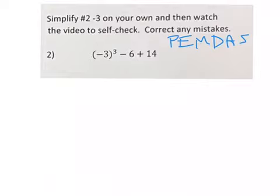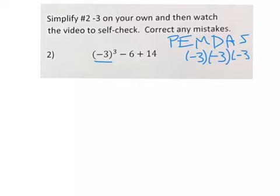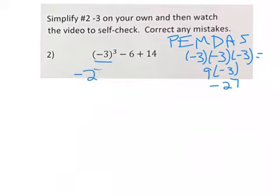Looking at this problem, I have negative 3 cubed. The negative 3 is in parentheses, so negative 3 is your base. That means negative 3 times negative 3 times negative 3. Negative 3 times negative 3 is positive 9, and positive 9 times negative 3 is negative 27. So this simplifies to negative 27.